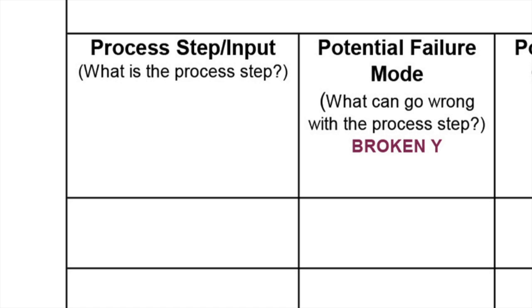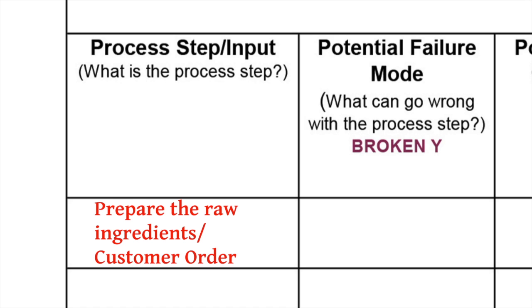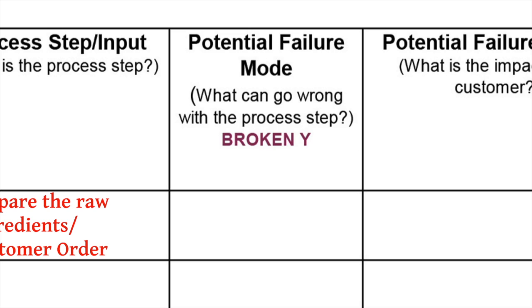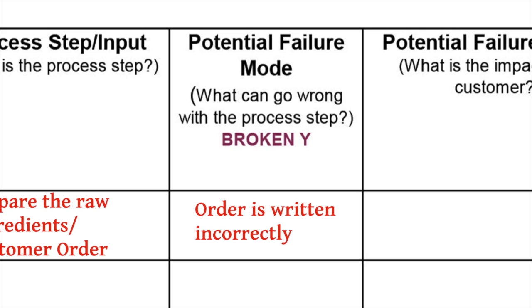Using our BLT lunch order to delivery process map, the first process step is to prepare the raw ingredients and the input is customer order. The second step in an FMEA form is to fill in the potential failure mode column for the associated process step and input listed. Failure modes are the ways in which the listed input might fail — failures can be any errors or defects, especially ones that affect the customer. For our example, a potential failure mode for the first process input of customer order is: order is written incorrectly.